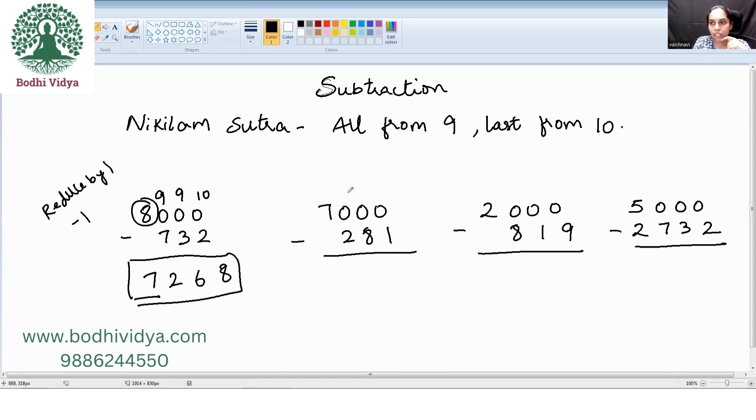So all from 9 last from 10. 10 minus 1 is 9, 9 minus 8 is 1, 9 minus 2 is 7. Reducing the 7 by 1 is 6.